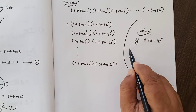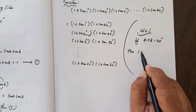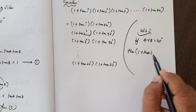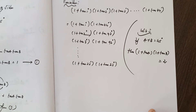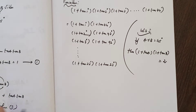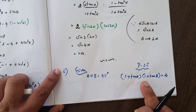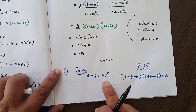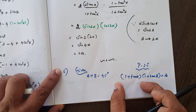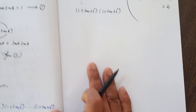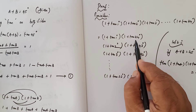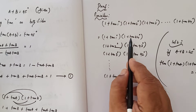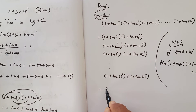We know that if A+B = 45°, then (1+tanA)(1+tanB) = 2. So here, since each pair of angles sums to 45°, each paired product equals 2.